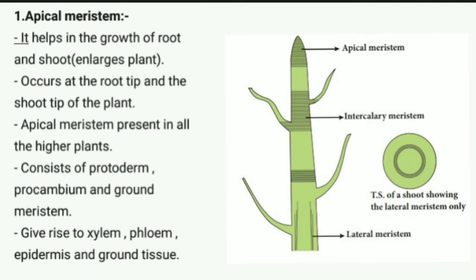On screen, you can see the longitudinal section of the shoot, differentiating the apical meristem at the apex, intercalary meristem which gives rise to nodes and internodes, and lateral meristem which gives rise to vascular tissues. A transverse section of the shoot is also shown, displaying the lateral meristem forming the vascular tissue system.